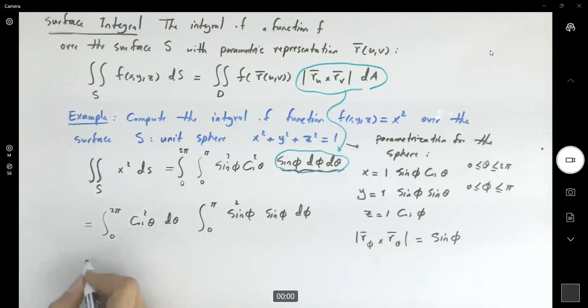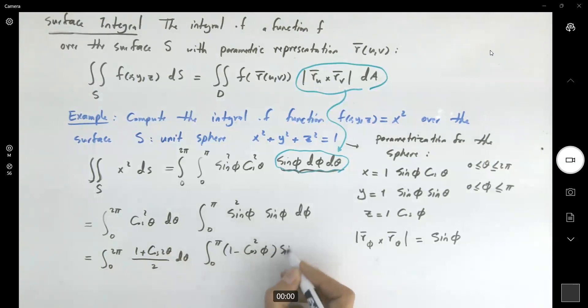Very good. So this can be written as ∫₀²π (1 + cos 2θ)/2 dθ. Here you have ∫₀π, and your sin² φ, let's write it as 1 - cos² φ, so you can use u-substitution, sin φ dφ.